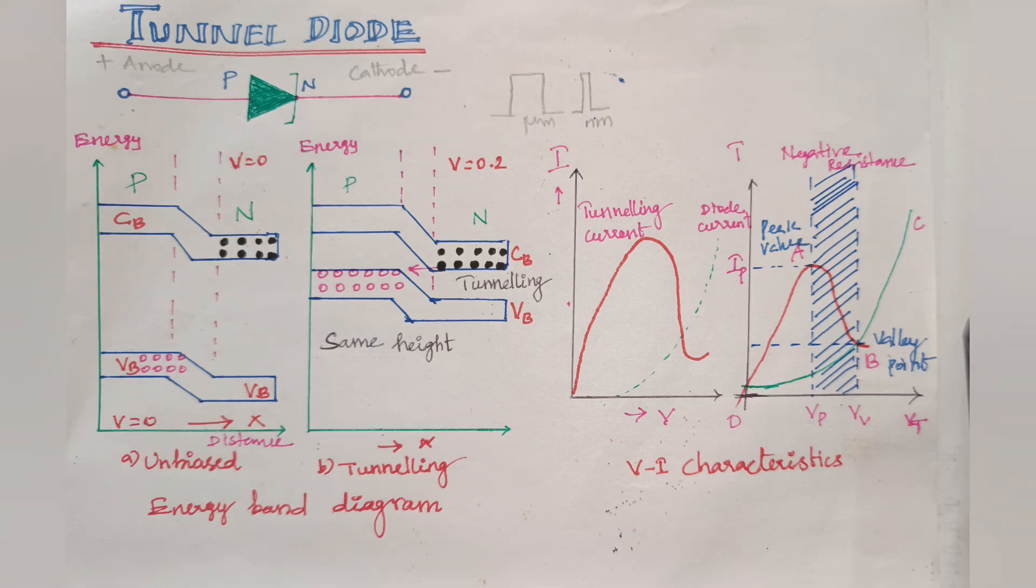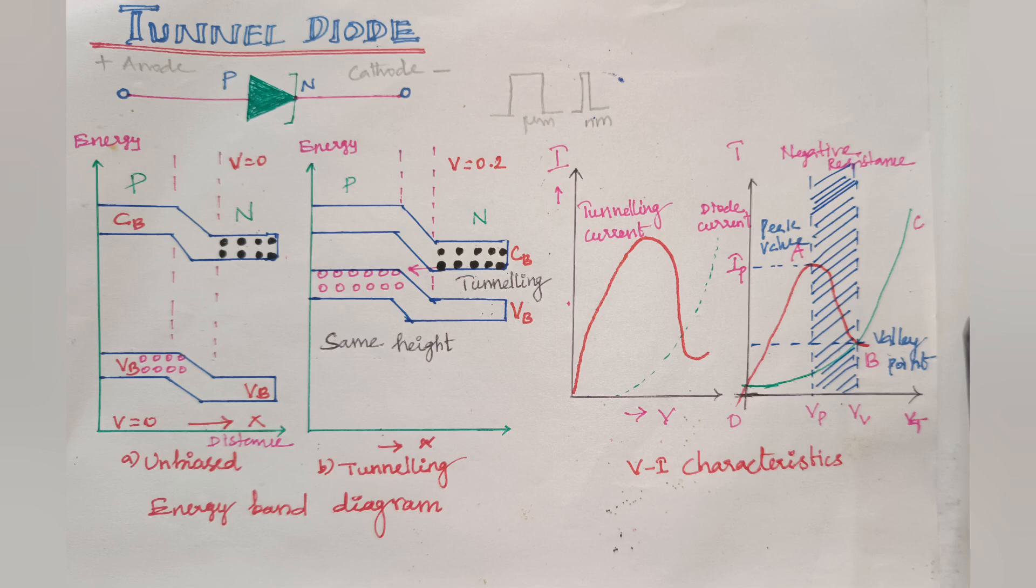Applications: It is used in microwave oscillators, clock generation oscillator circuits, logic memory storage devices, and ultra-high-speed switches, where the speed of the device is within nanoseconds or picoseconds. These are some of the applications of the tunnel diode. Thank you.